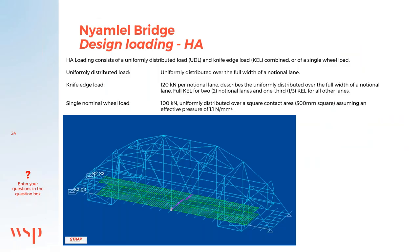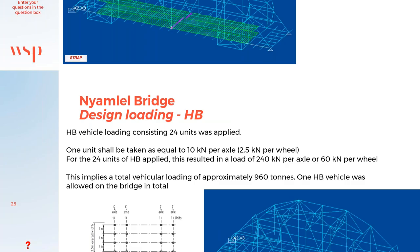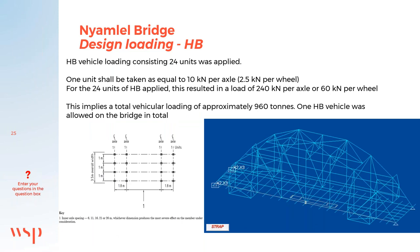Regarding traffic loading: the HA design load was applied, consisting of a uniformly distributed load as well as 120 kilonewton knife-edge loading used in combination, or a single wheel load of 100 kilonewtons. These loads were applied to cause the most adverse effects. HB24 design loading was used, implying 24 units of HB were applied, resulting in a load of 240 kilonewtons per axle. A combination of the two traffic loads was also applied.